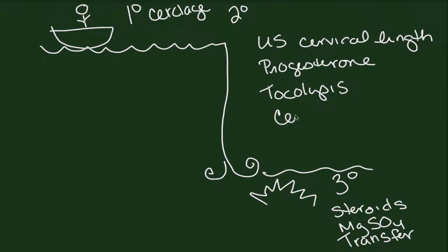Cerclage actually also falls here under secondary prevention because it's something you can use together with an ultrasound finding of a shortened cervical length. And one of the newer things we have in this category is 17-hydroxyprogesterone, which we give weekly to women that have a history of a previous preterm birth.